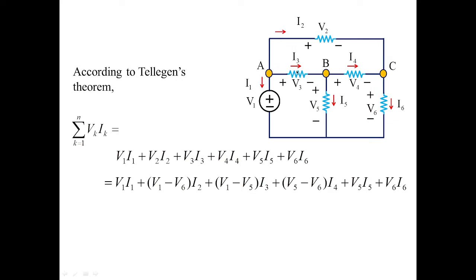For branch V3I3: V3 is placed between A and B, so VA equals V1 and VB equals V5. Therefore V3 equals V1 minus V5, and branch power is (V1 minus V5) times I3. For V4I4: V4 is between node B and node C, so VB equals V5 and VC equals V6. Therefore V4 equals V5 minus V6, giving power (V5 minus V6) times I4, plus V5I5 and V6I6 as they are.